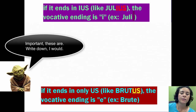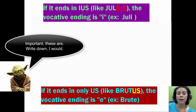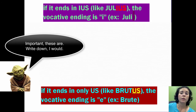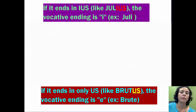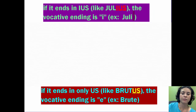If it ends in only U-S, like Brutus, the vocative ending is E — for example, Brute. This is of course where Shakespeare worked his famous quote, 'et tu Brute,' which means 'and you, Brutus.' Here he correctly uses the vocative ending of Brutus.